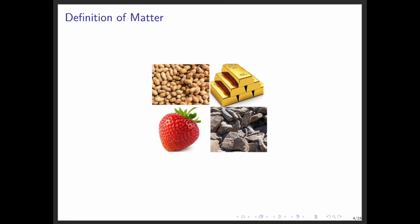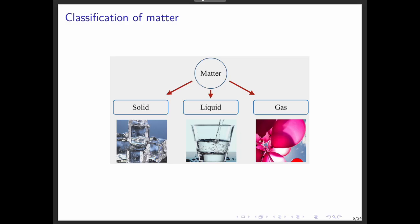Now, let's move on to how matter is classified. Under normal conditions, matter exists in three primary states. Solids are rigid, with fixed shapes and volumes, like a rock. Liquids have a fixed volume but no fixed shape, meaning they take the shape of their container, like water in a glass. Gases have neither a fixed shape nor a fixed volume. Instead, they expand to completely fill their container, like the air inside a balloon.